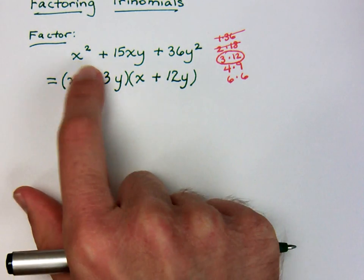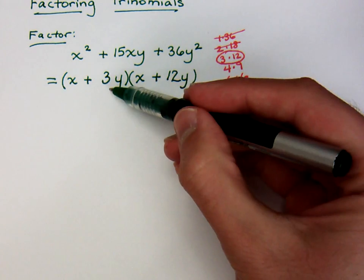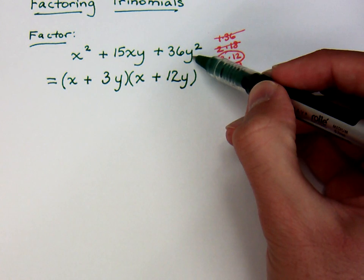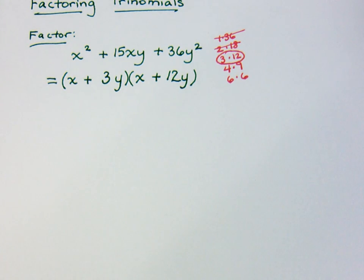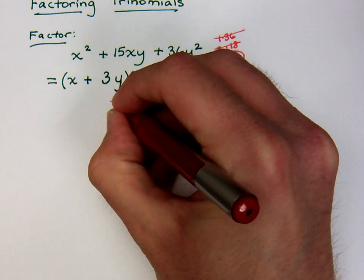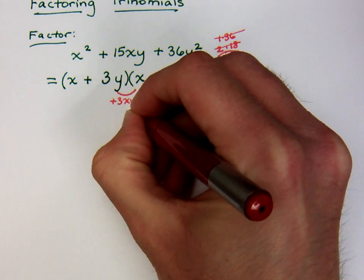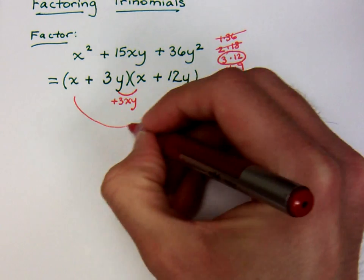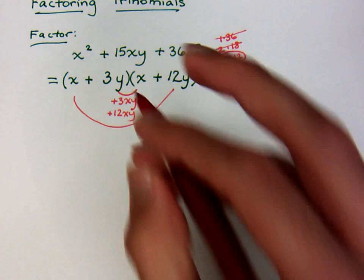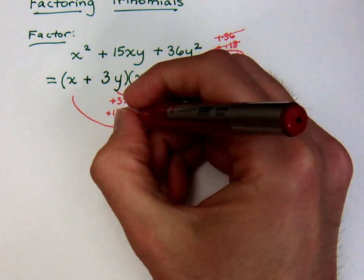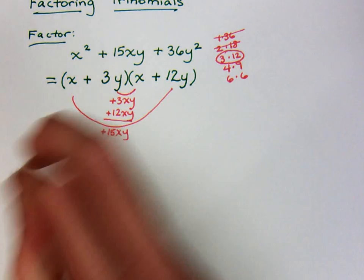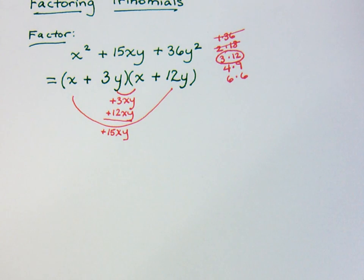Check this. x times x is x squared. 3y times 12y, well, the 3 times 12 gives you 36, y times y is y squared. Look at the inside and outside pieces. When you do 3y times x, that's a positive 3xy, and on the outside, that's a positive 12xy. So, when we combine all of this, there's your positive 15xy, just like we were supposed to have.